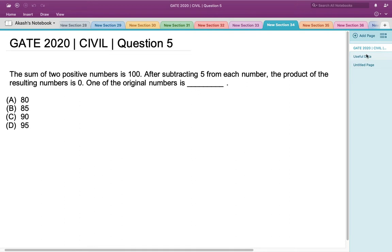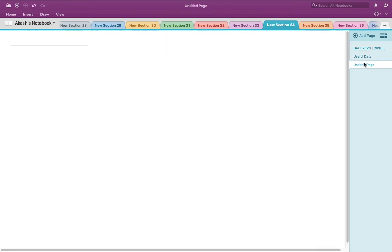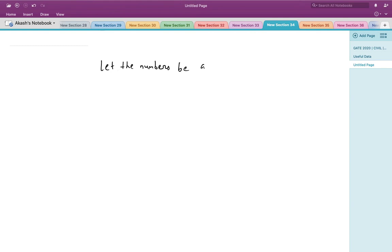to be a and b. Now it is given that the sum of the two numbers is 100, so a + b = 100.